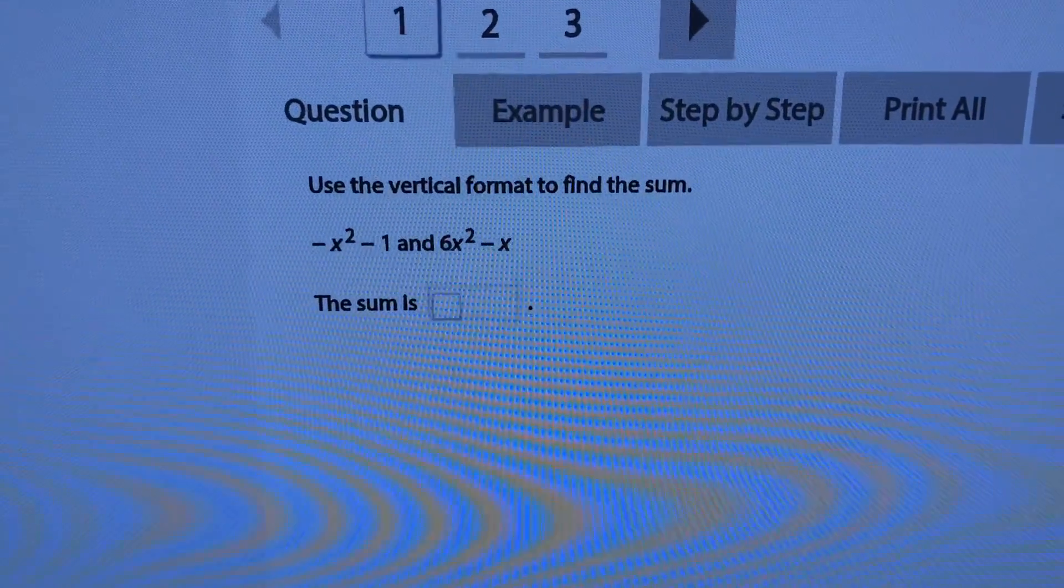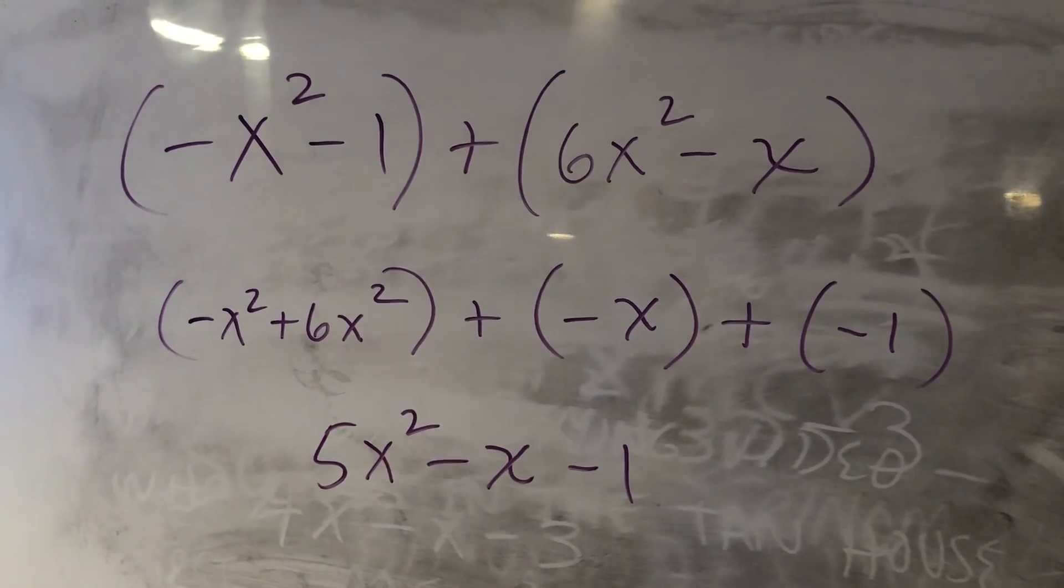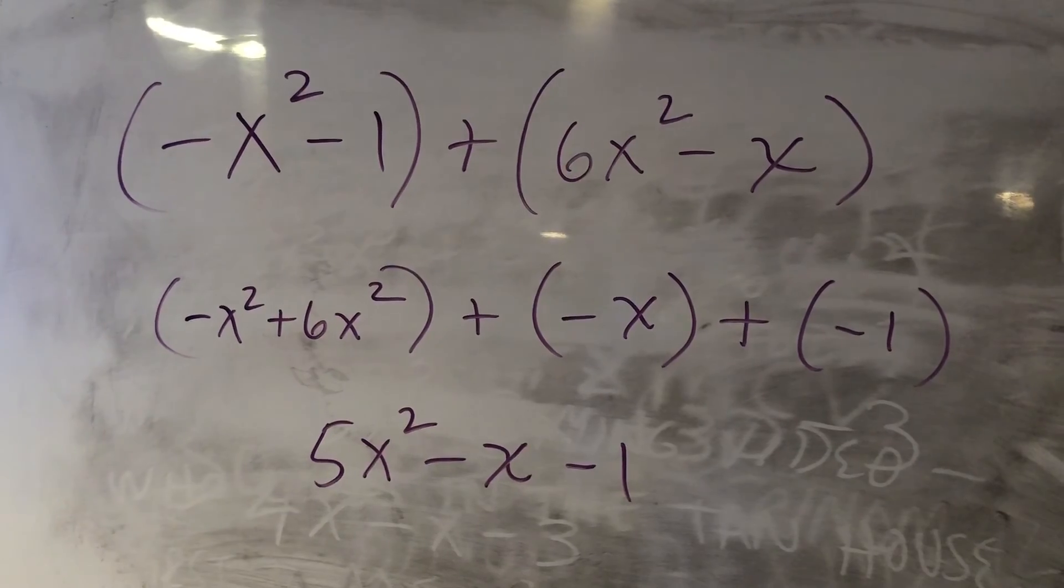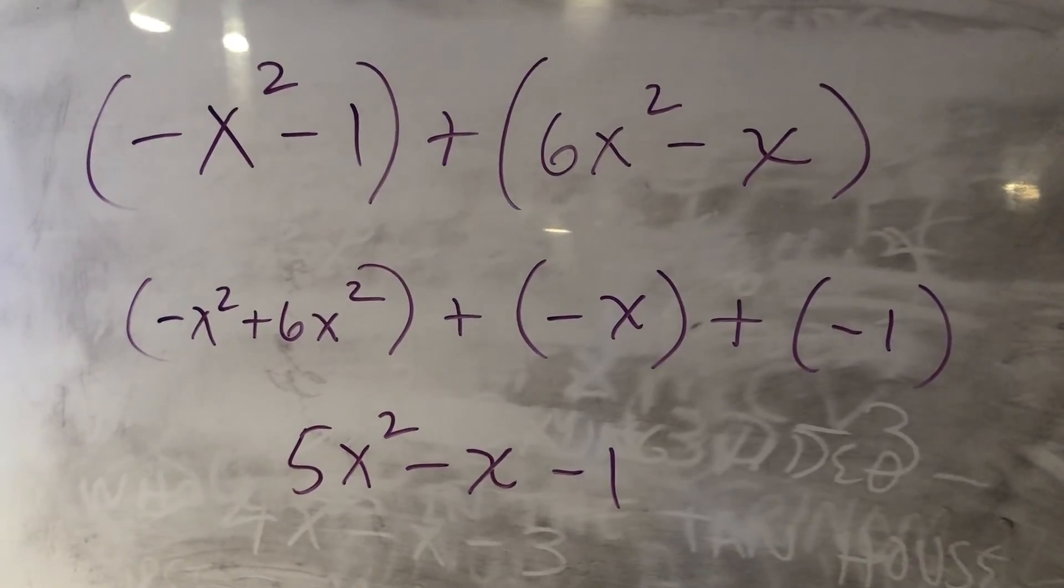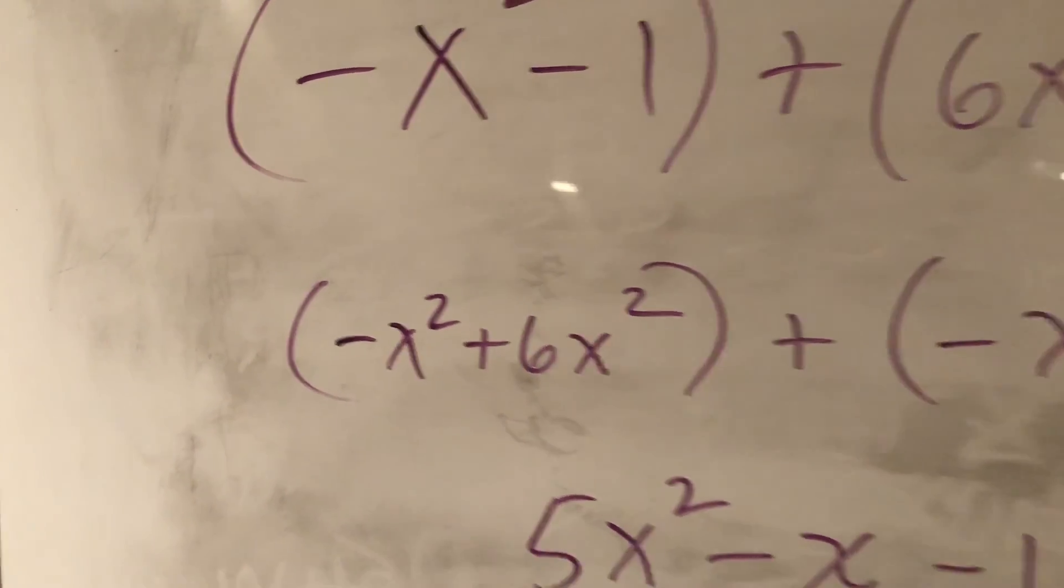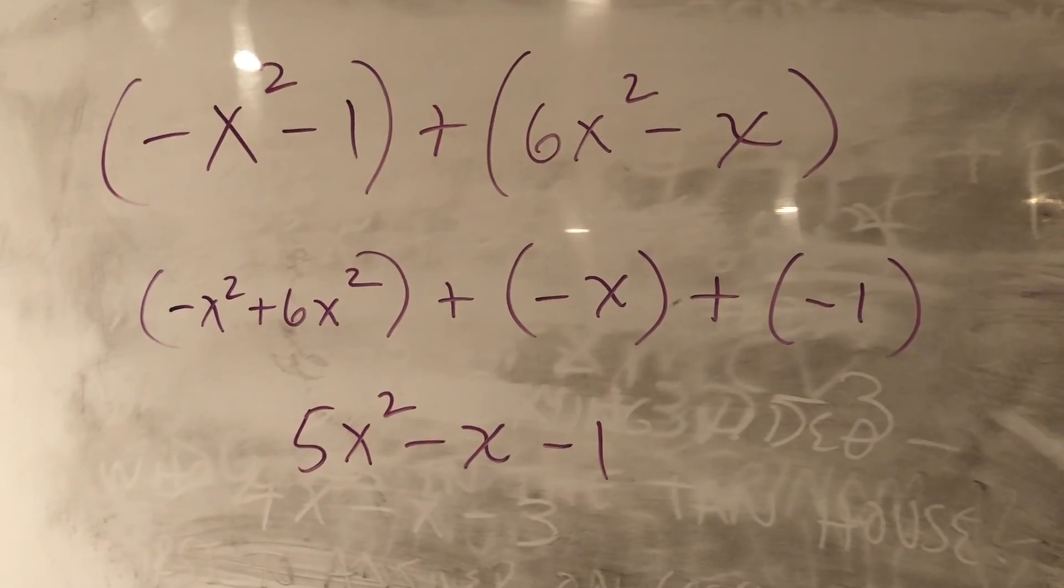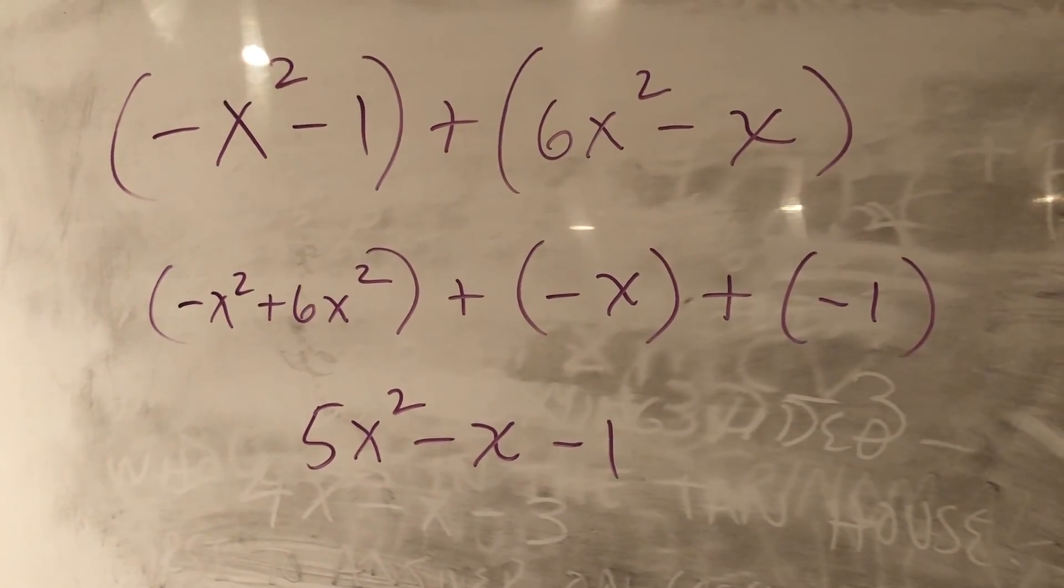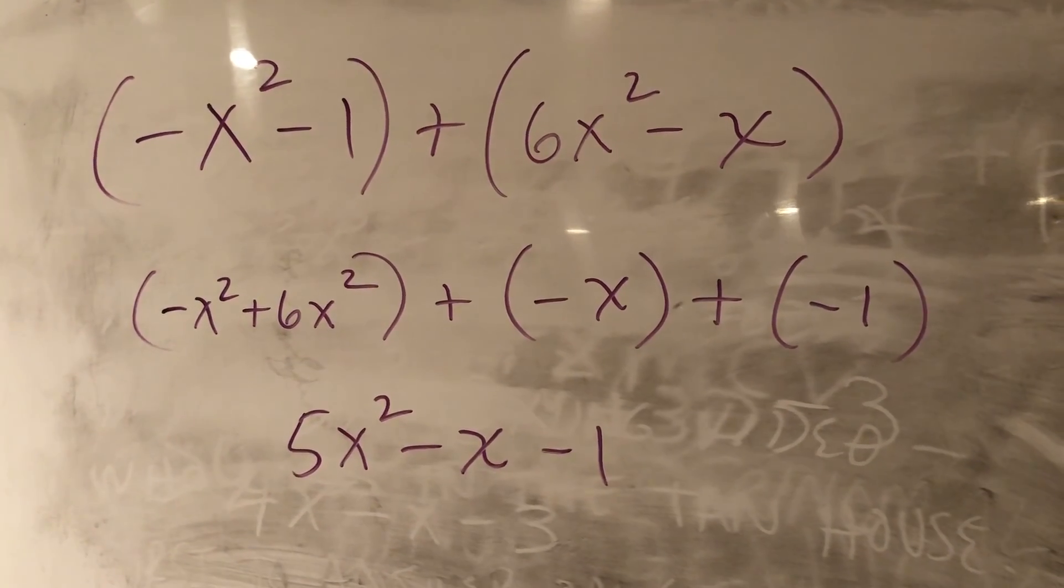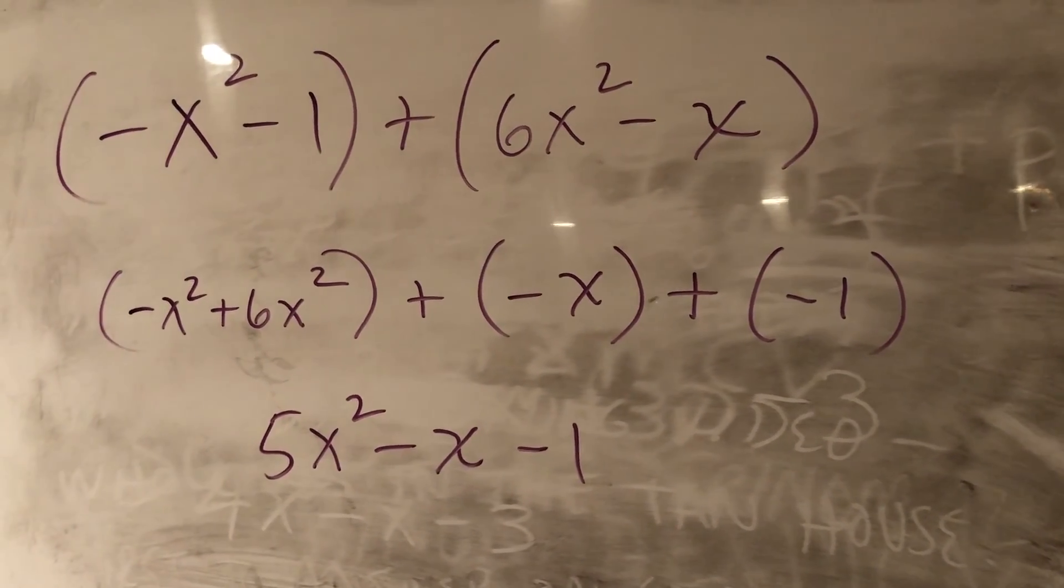Okay so first we reformat the problem and we're going to put a plus sign in between these two quantities. Then we look for like terms: negative x squared and 6x squared go together. Then we don't really have anything that matches up with the negative x or with the negative one so they stand alone. And we see that negative x squared plus 6x squared is 5x squared, and then we just drop down the minus x and the minus one. Pretty simple right?